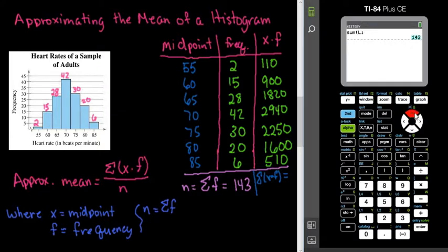So, again, what you can do is you can go up and just grab this and then change the L2. We could change this to 2nd L3 and then hit enter and it gives us 100 and – or, sorry, 10,130.